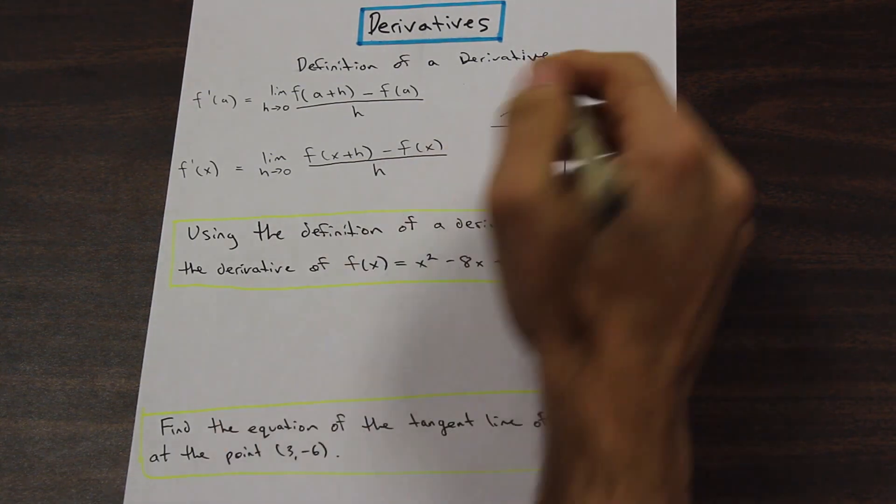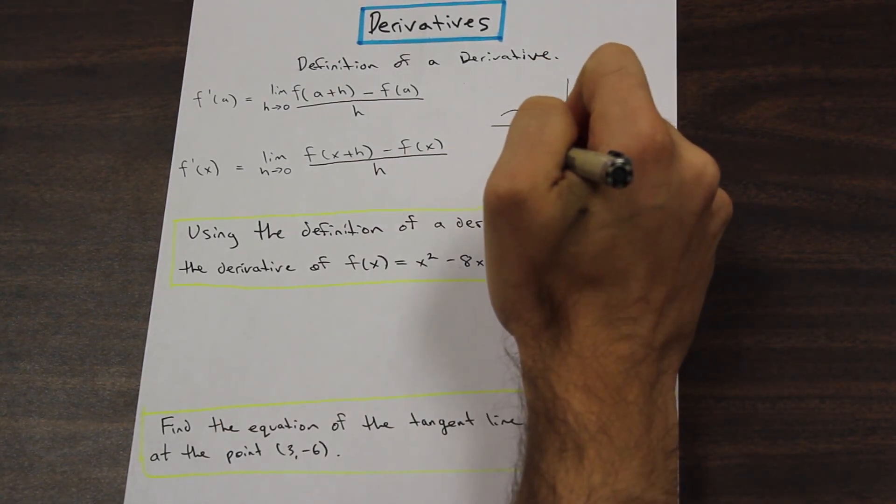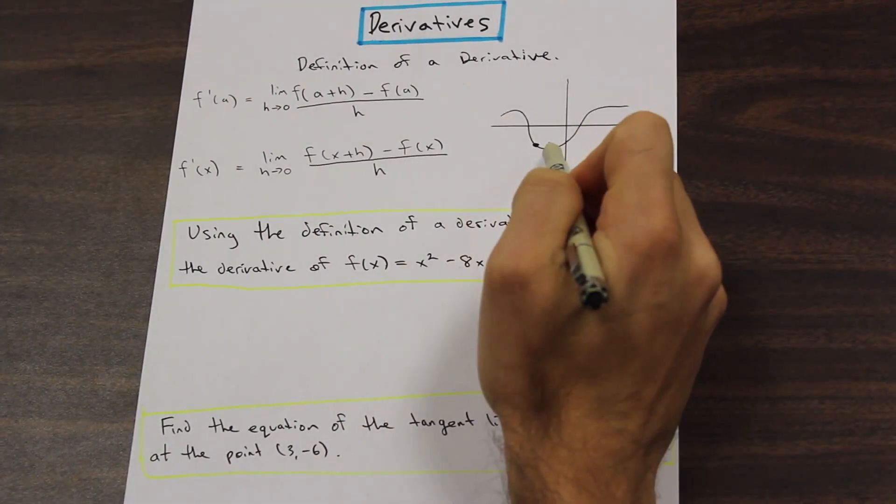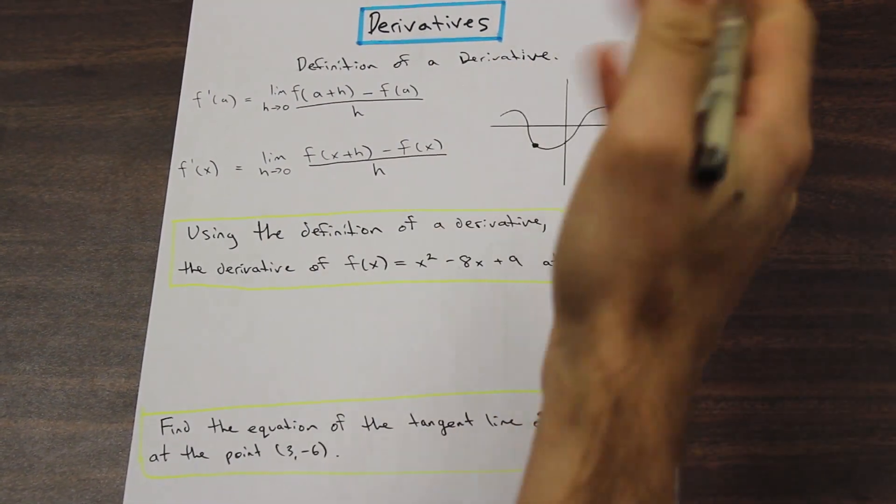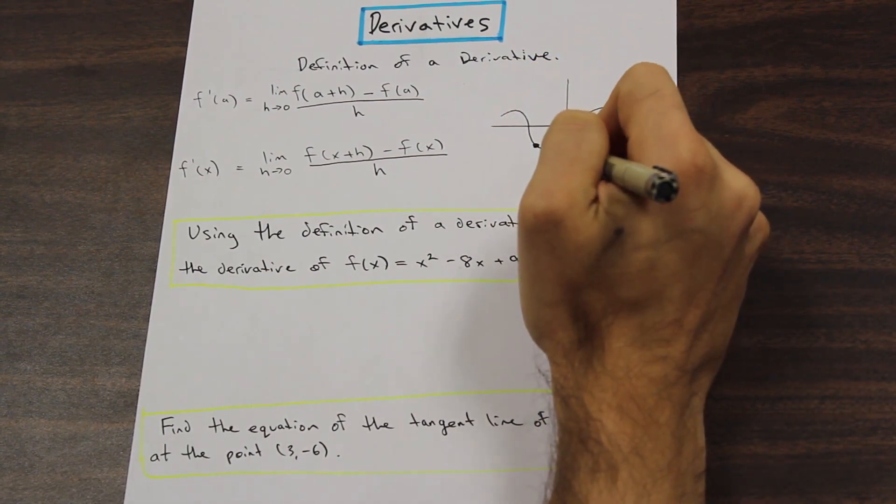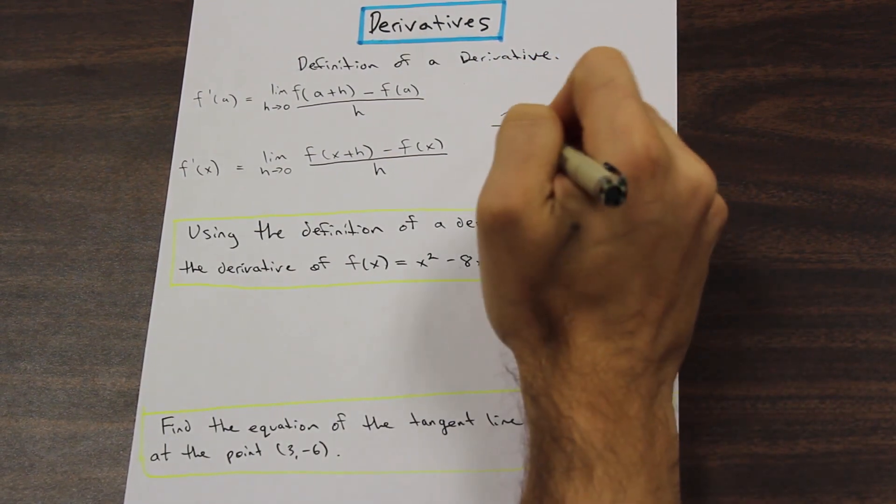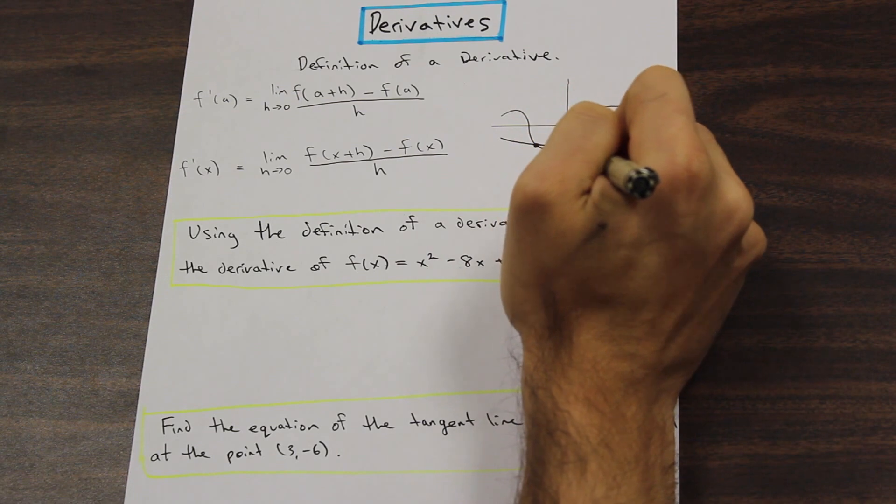But I can give you a little bit of an example. For example, you have a point here on the function. And if you draw another point here, we'll call this x, and we'll call that x naught, and you connect these two lines here.